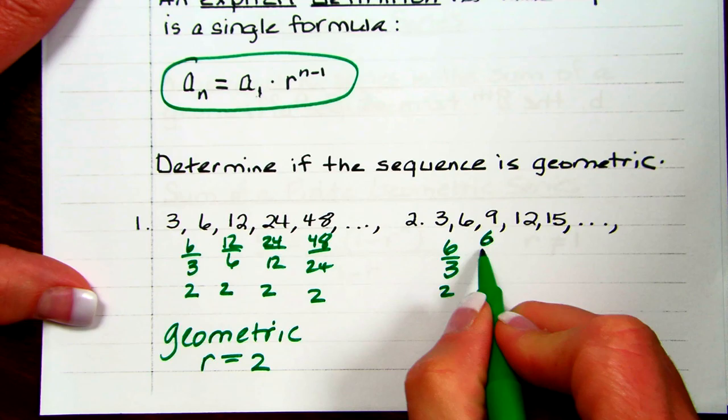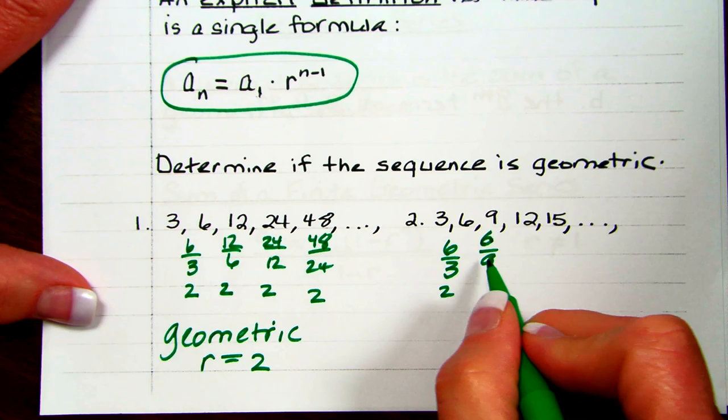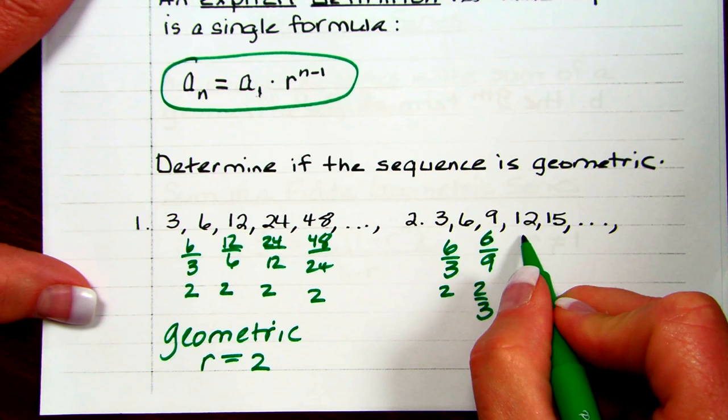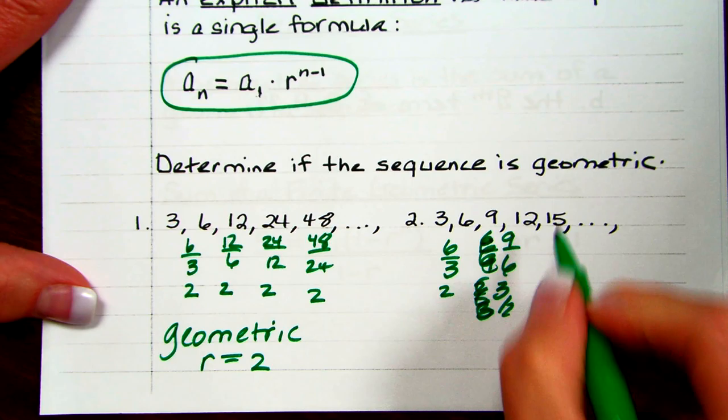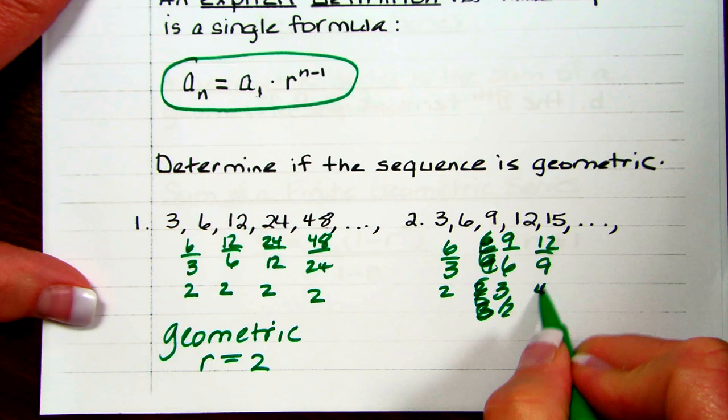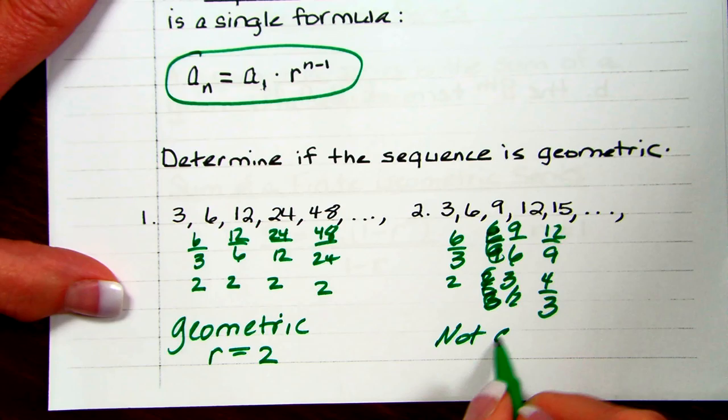If you look at the next one — 3, 6, 9, 12 — and we did 6 divided by 3, that's 2. But 6 divided by 9 is not 2; that's 2 thirds. Actually, this would be 9 divided by 6, so that's 3 halves. You can tell that's not going to be 2. And then 12 divided by 9 would be 4 thirds. So this one is not geometric.